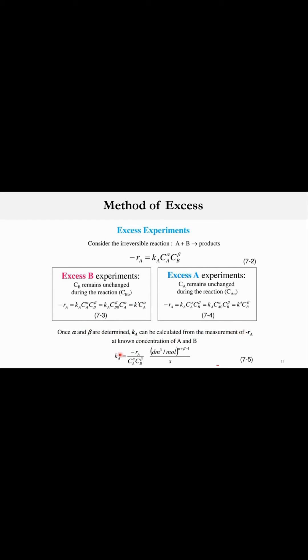Once alpha and beta are determined, K_A can be calculated from the measurement of minus R_A as: K_A equals minus R_A divided by C_A raised to power alpha times C_B raised to power beta. Since we already know alpha, beta, concentrations, and the rate of reaction, we can calculate K_A. This is the method of excess, where we convert the system to a pseudo first order system.